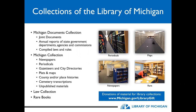Some of the collections users typically take advantage of include the Michigan Documents collection — any document or publication produced by state government departments, agencies, and commissions — including early joint documents during the territorial and state periods, compiled laws and rules, everything from the Michigan Manual to reports from the Gaming Commission to the Board of Corrections and Charities. We also have the Michigan collection, which includes newspapers, periodicals, gazetteers and city directories, plats and other maps, county and place histories, cemetery transcriptions, and other unpublished material. We're also home to the state law library.